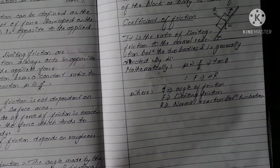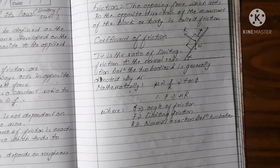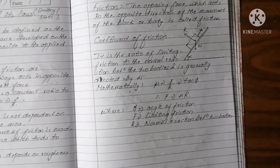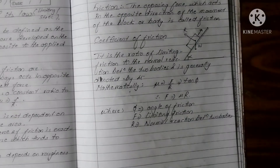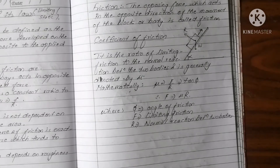Coefficient of friction: it is the ratio of limiting friction to the normal reaction between two bodies, generally denoted by mu. Mathematically, mu is equal to F/R, which is equal to tan(phi), where phi is the angle of friction, F is limiting friction, and R is normal reaction between two bodies.